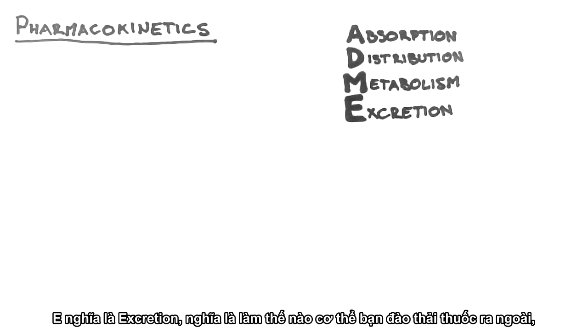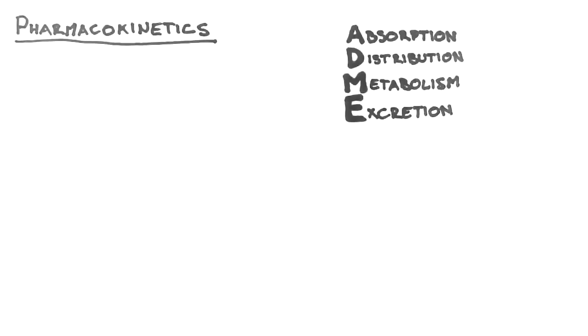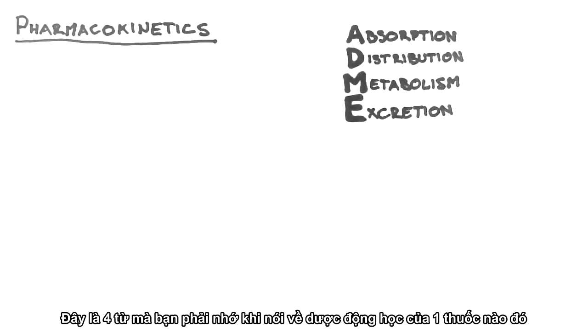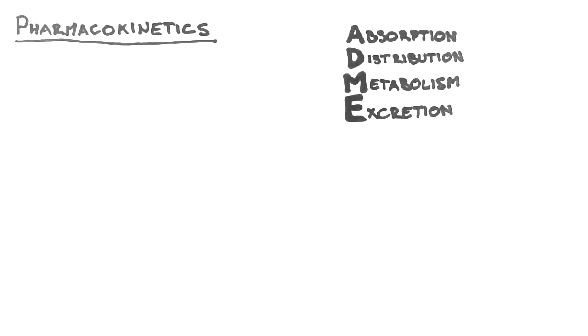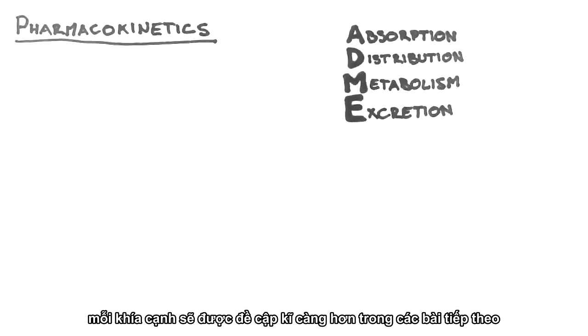And finally, Excretion, which is how the body gets rid of the drug. These are four elements we need to consider when talking about the pharmacokinetics of a certain drug. The following tutorials will each talk about a certain aspect of pharmacokinetics.